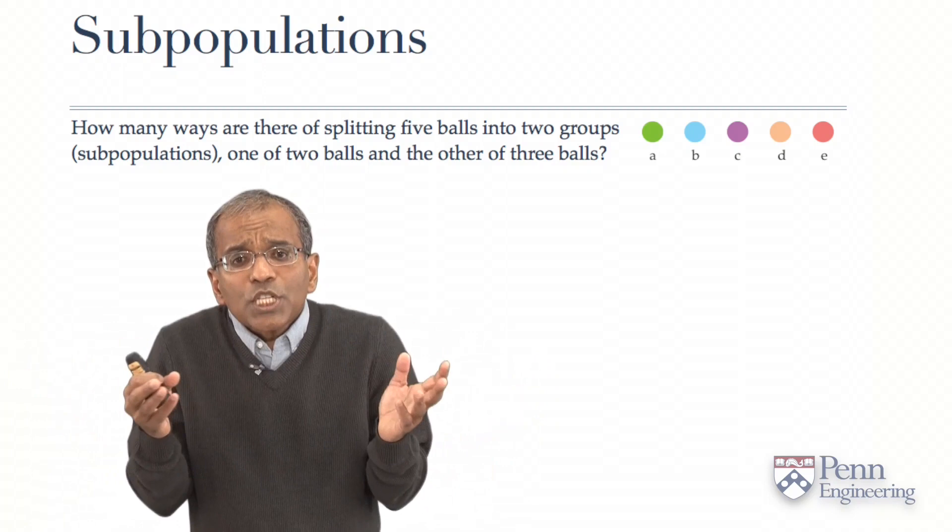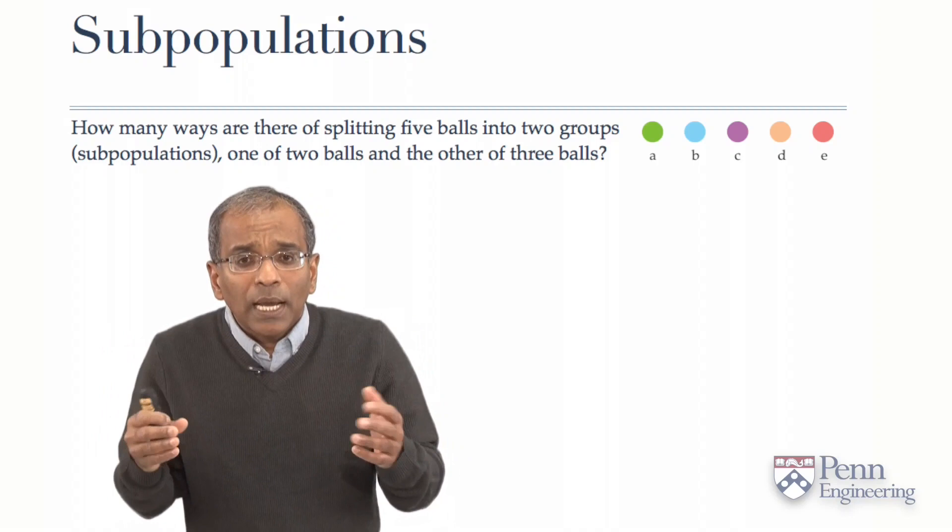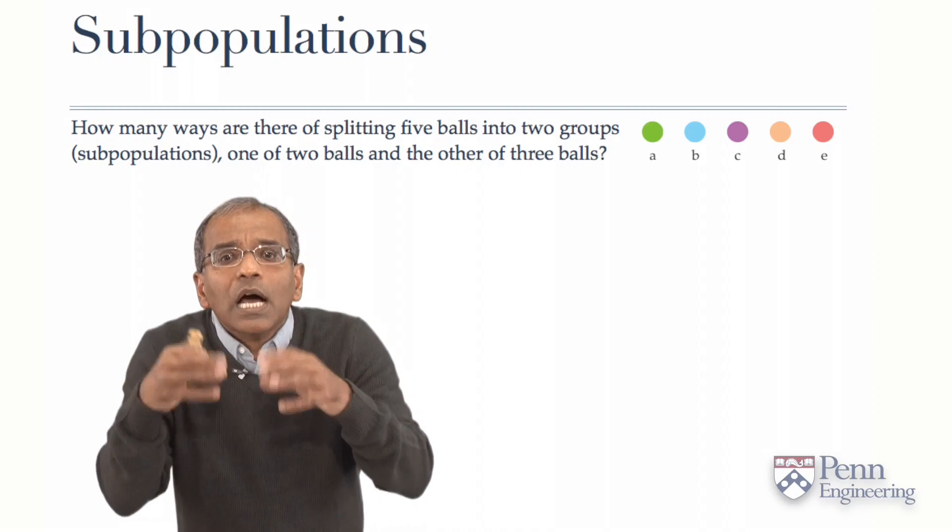Or you could just as well call them five letters A through E, or give them any other names you care to. The semantics of the problem are of no interest to us. It is a numerical count that matters.